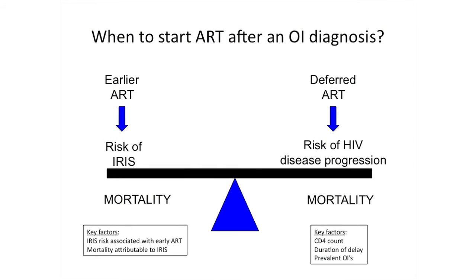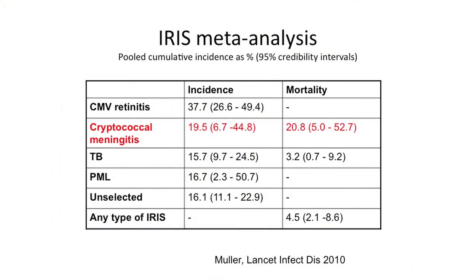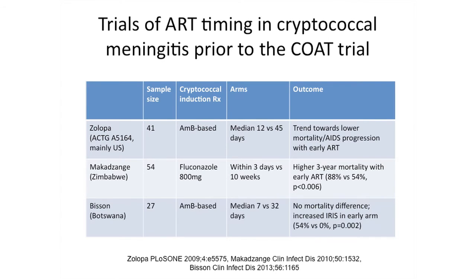Similar to what was discussed regarding TB, the risks to consider in early versus deferred ART in cryptococcal meningitis include the mortality risk associated with IRIS compared to the risk of deferring. Key factors: how common is IRIS, and is there mortality associated with IRIS? In a meta-analysis, one in five patients who developed cryptococcal meningitis IRIS died. So IRIS is associated with substantial mortality because of the neurological involvement — in contrast to TB IRIS.